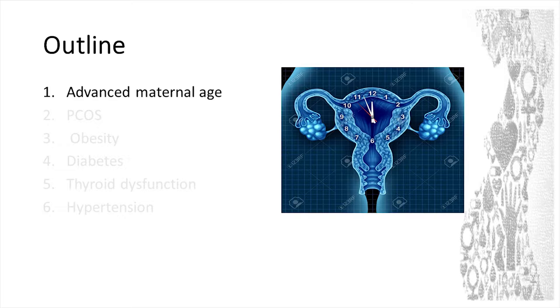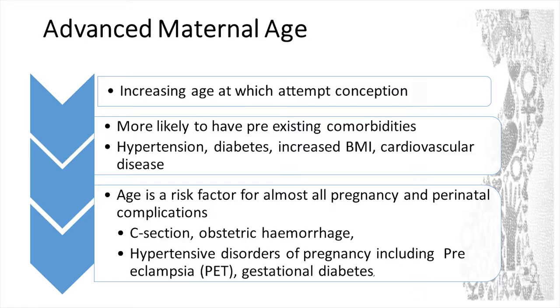I'll start with advanced maternal age. I remember the first time I turned up to my obstetrician and one of the first things on the problem list was advanced maternal age, and I was devastated. But it's really common and increasingly common, and that's why they're presenting to you and subsequently to Fertility Solutions. For me, it means they're more likely to have pre-existing comorbidities — hypertension, diabetes, increased BMI, and increasingly cardiovascular disease, which we didn't usually used to think about. It's also a risk factor for almost all pregnancy and perinatal complications independently — C-section, obstetric haemorrhage, hypertensive disorders, and gestational diabetes.